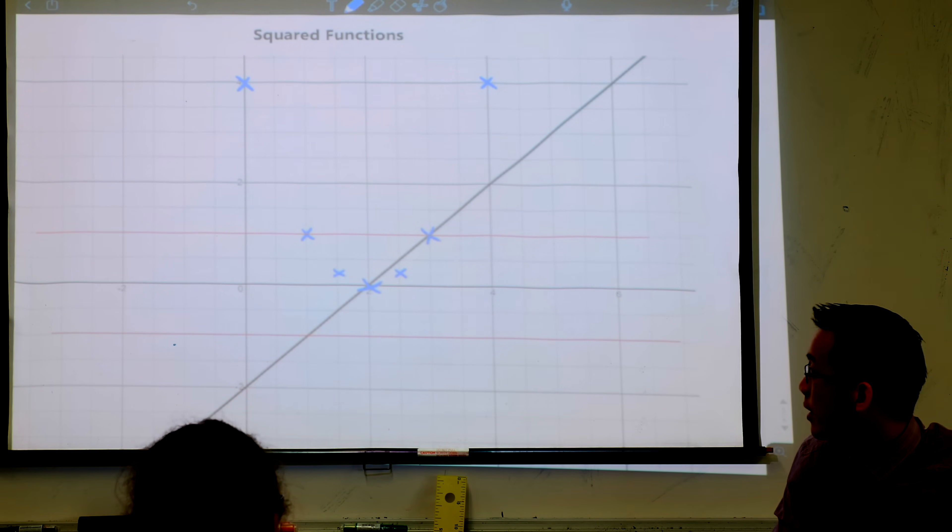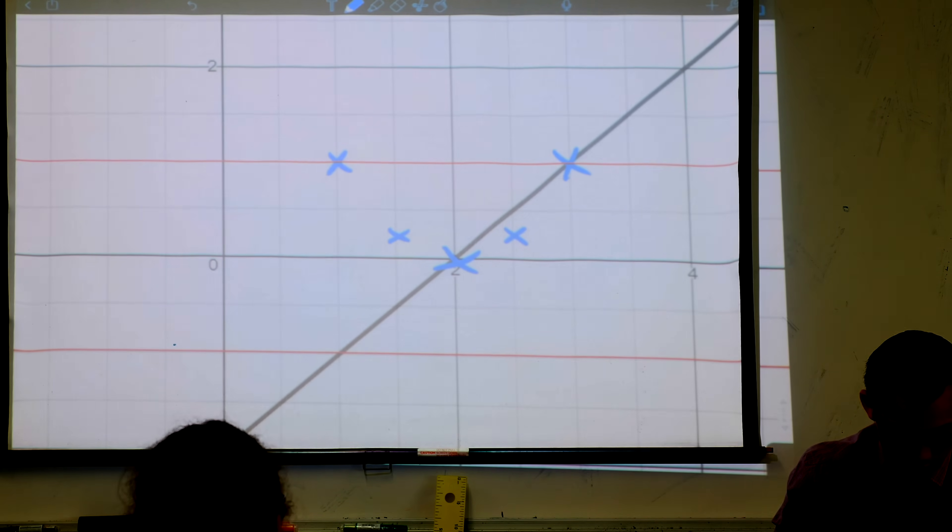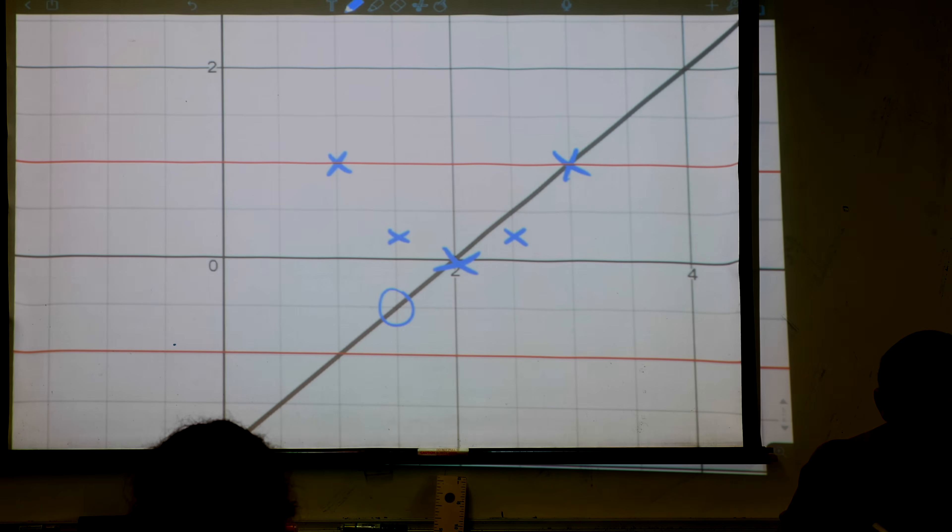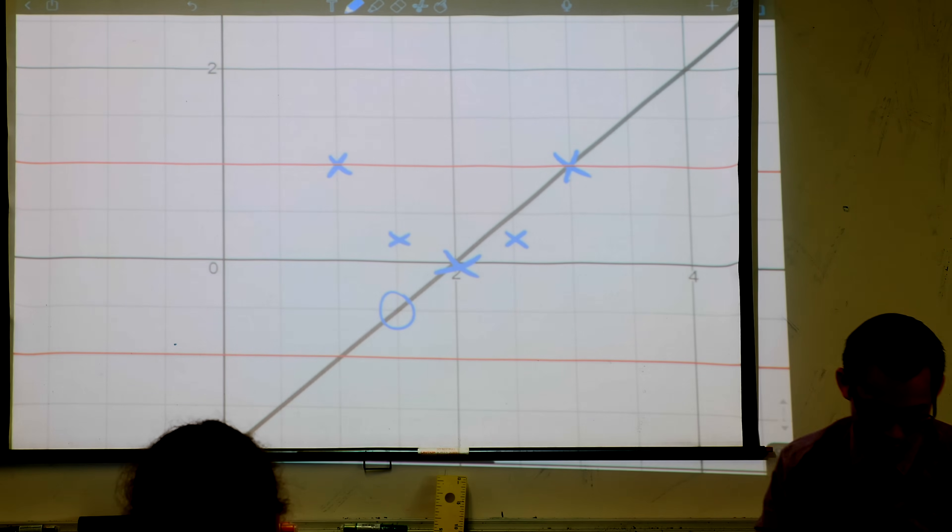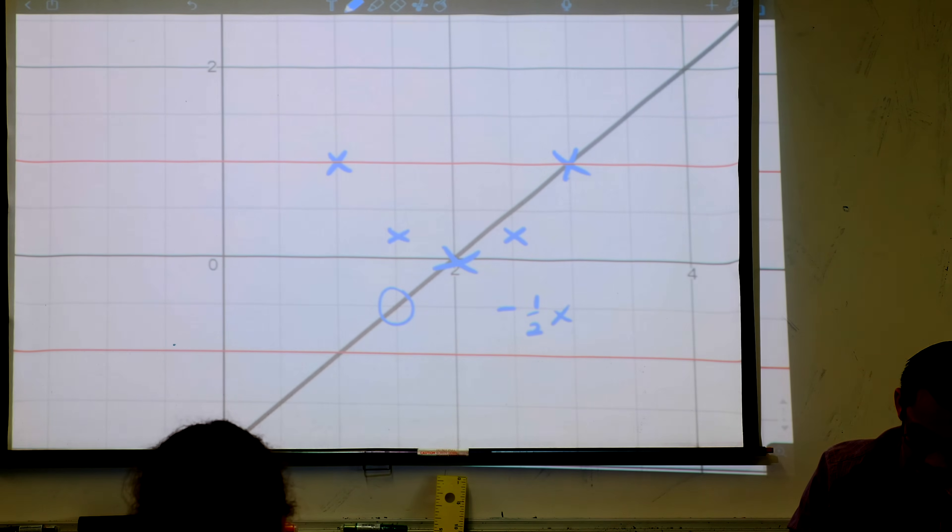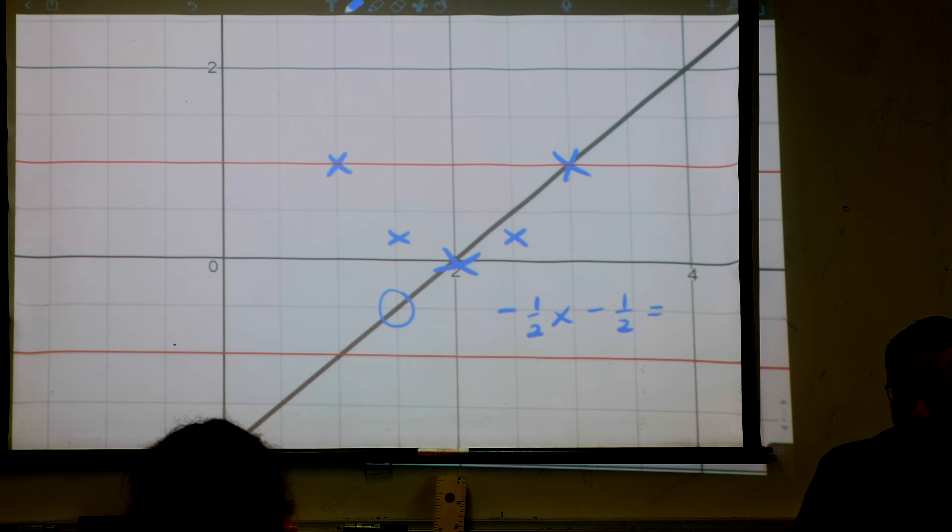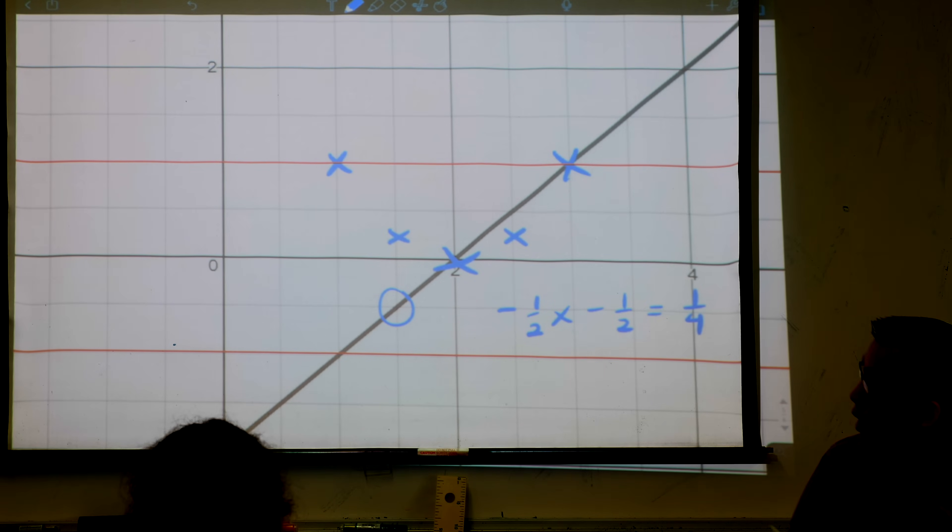There's the original function right there. It's negative a half. I'm squaring the function. Negative a half times negative a half equals a quarter, which is right there.